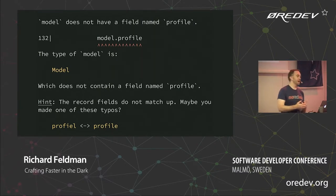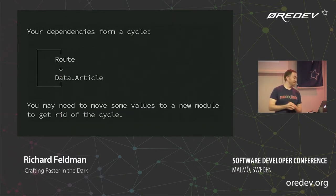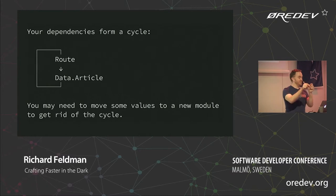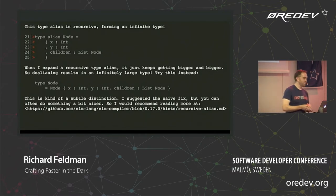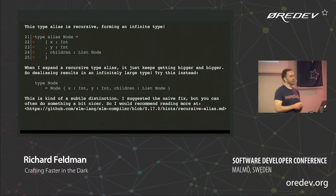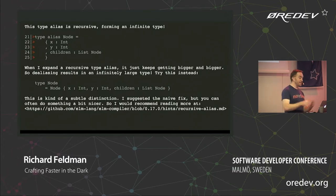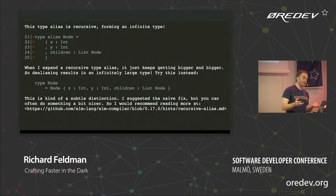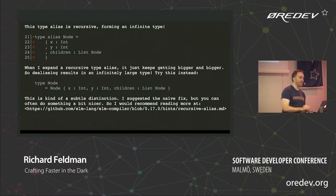This is something Elm is known for — really helpful compiler errors that are not just well formatted, they're trying to actually assist you. There's even a little ASCII art one for circular dependencies: you may need to remove some of these things, because right now this depends on this, which depends on this, which depends on this — forming a cycle. Another error message says: this type alias is recursive, forming an infinite type. When I expand a recursive type alias it just keeps getting bigger. So dealiasing results in an infinitely large type. Try this instead — and it gives you code that will actually compile. It says: this is kind of a subtle distinction, I suggested the naive fix, but you can often do something nicer — see this link.